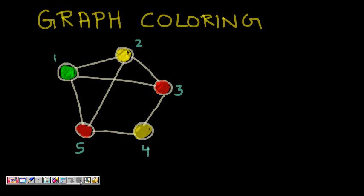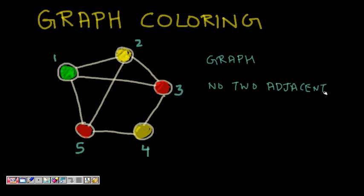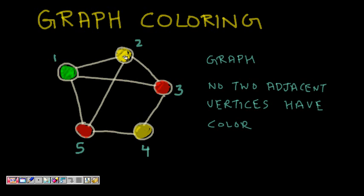We will discuss the problem of graph coloring. Graph coloring is a very interesting problem in which you are given a graph consisting of vertices and edges, and you have to color the graph such that no two adjacent vertices have the same color. Here we see five nodes colored green, yellow, and red such that none of them have the same color.